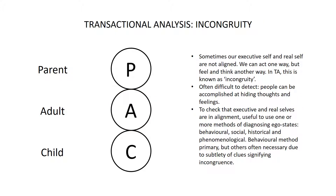Sometimes our executive self and real self are not aligned — we can act one way, but feel and think another way. In transactional analysis, this is known as incongruity. Incongruity can be difficult to detect, as people can become accomplished at hiding their true thoughts and feelings. We may have to use a variety of methods to check if a person's executive and real selves align. This means using as many as possible of the four methods of diagnosing ego states: behavioral, social, historical, and phenomenological. The primary method is likely to be behavioral, but the others are often necessary, since subtle behavioral cues signifying incongruence can be difficult to spot.